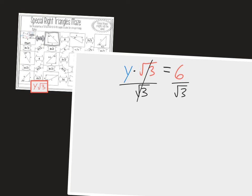So on the left side, it cancels. I have just Y on the left side. On the right side, I have 6 divided by root 3. And then we can do what's called rationalize the denominator or get rid of the radical on the denominator. And I know that if I multiplied by another root 3 on the denominator, then I would get root 3 times root 3, which is just 3.